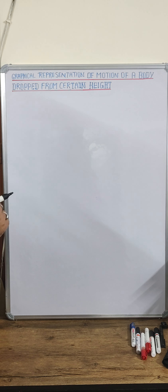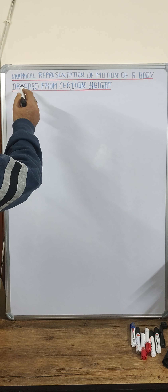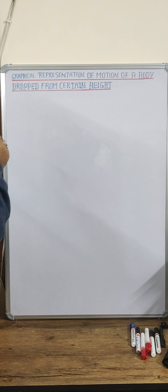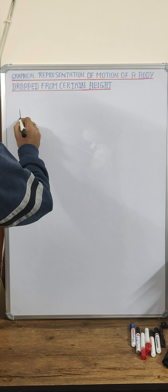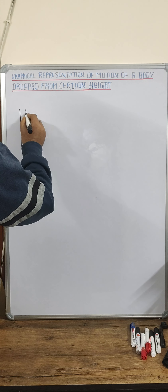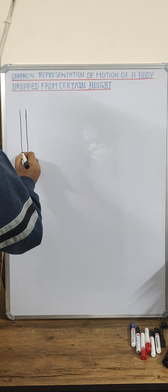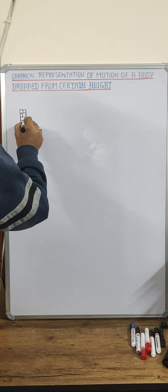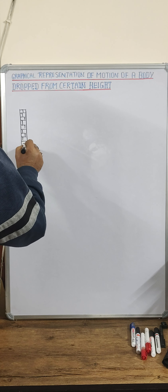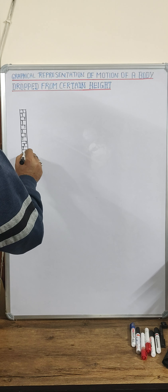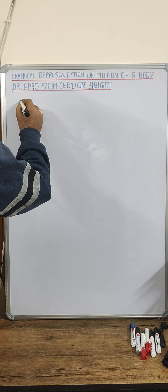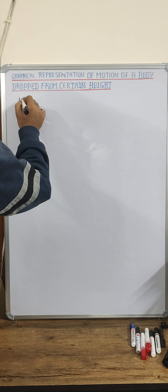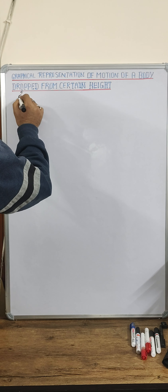Students, now we will discuss graphical representation of motion of a body dropped from certain height. Let us consider a body is dropped from the top of a tower of height equal to h. Let us understand how we can represent graphically the motion of the body.